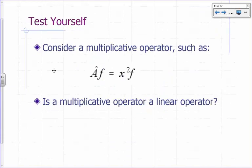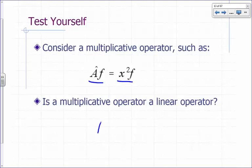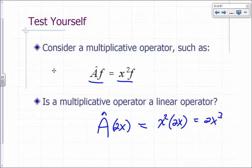A multiplicative operator simply multiplies the function by something — it could be a function of the variable or a number. For example, if a-hat f equals x² f, then a-hat operating on 2x gives x² times 2x = 2x³. Is a multiplicative operator a linear operator? The answer is yes, and that is going to be your next homework: show that it is a linear operator.